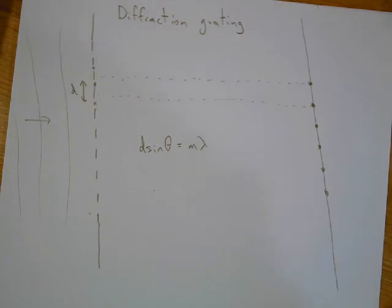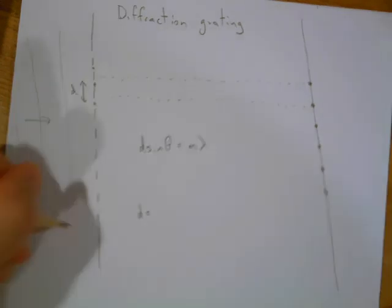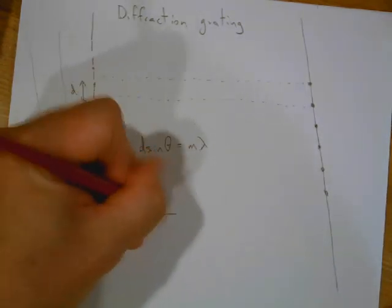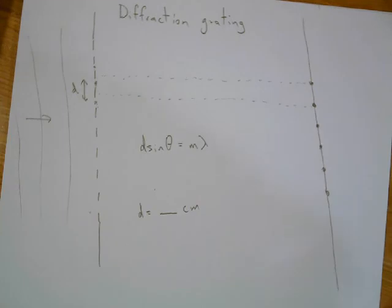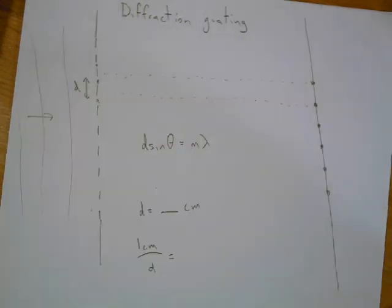So a lot of times with the diffraction grating they're going to ask you to solve for how many slits per centimeter do you have. So if you get d and you change that to centimeters, you get some number centimeters. And then if the question is asking how many slits per centimeter, well then you take one centimeter and you divide by d and you get your answer.